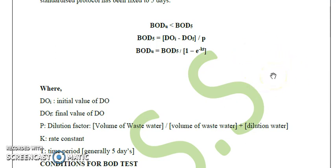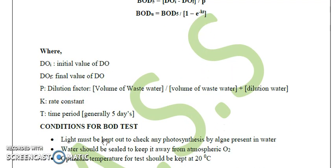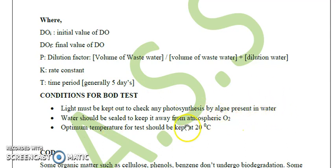Maximum photosynthesis in a water body by phytoplankton takes place in red and violet light. For the BOD test, light must be kept out to prevent photosynthesis by algae present in the water, so that there is no contamination in our BOD reading from algal photosynthesis.